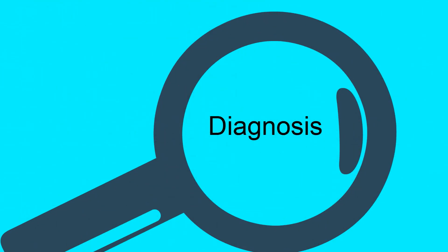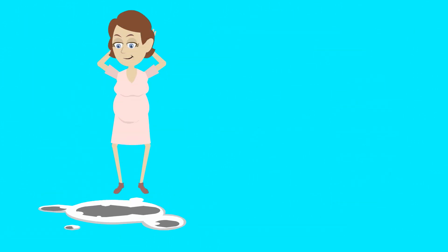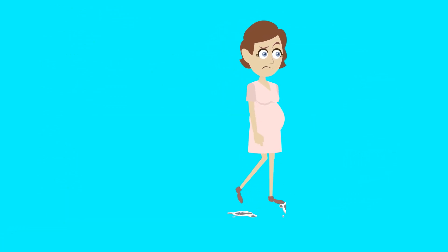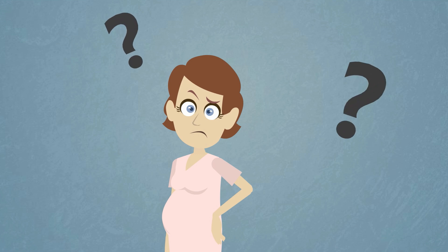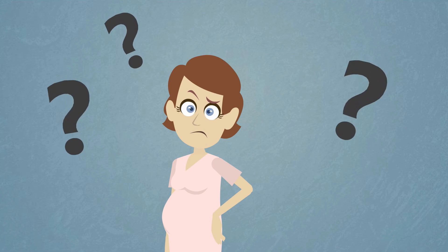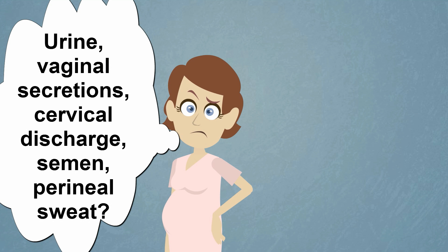It is very important to be able to accurately diagnose when a patient has had rupture of her membranes. Patients may describe an obvious gush of fluid or they may describe a steady leakage of small amounts of fluid. It can be confusing, as during pregnancy there are many things that can mimic amniotic fluid — it could be urine, normal vaginal secretions of pregnancy, increased cervical discharge, semen, or just perineal sweat.